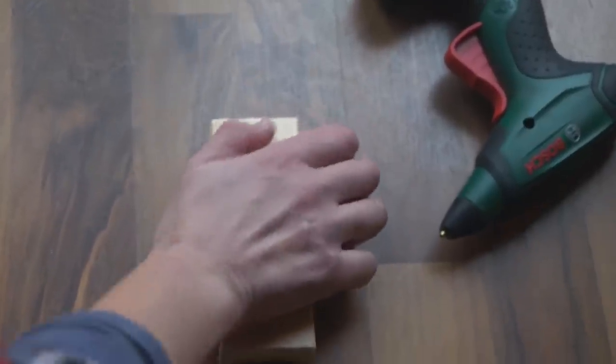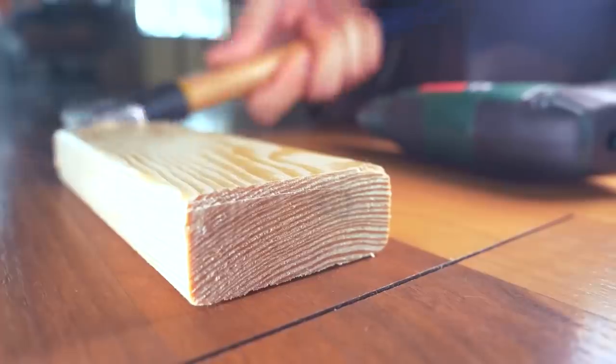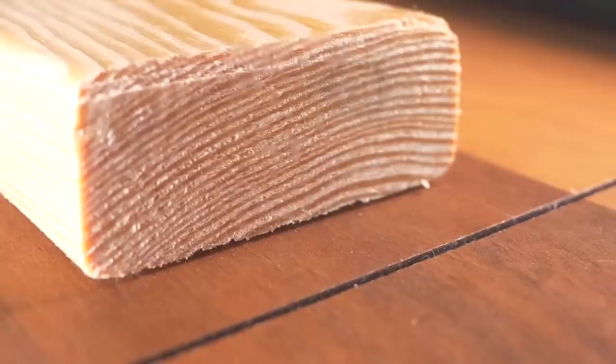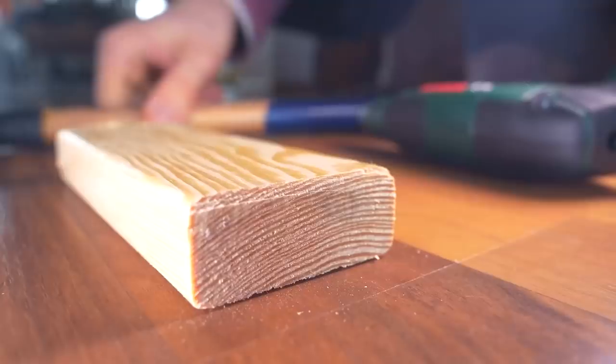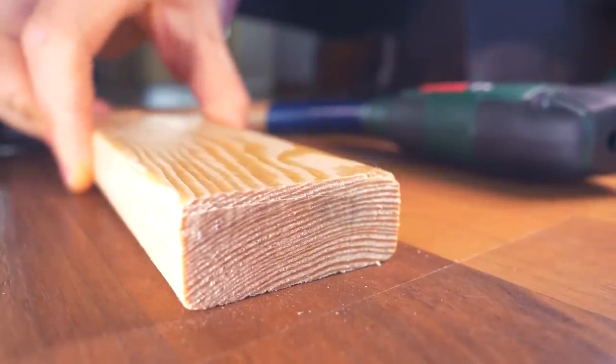Now take the hammer and hit the bar towards the gap. After a few strokes, the gap narrows and the boards fit together tightly. The board should come off the laminate without any problems if you don't overdo it with the glue.